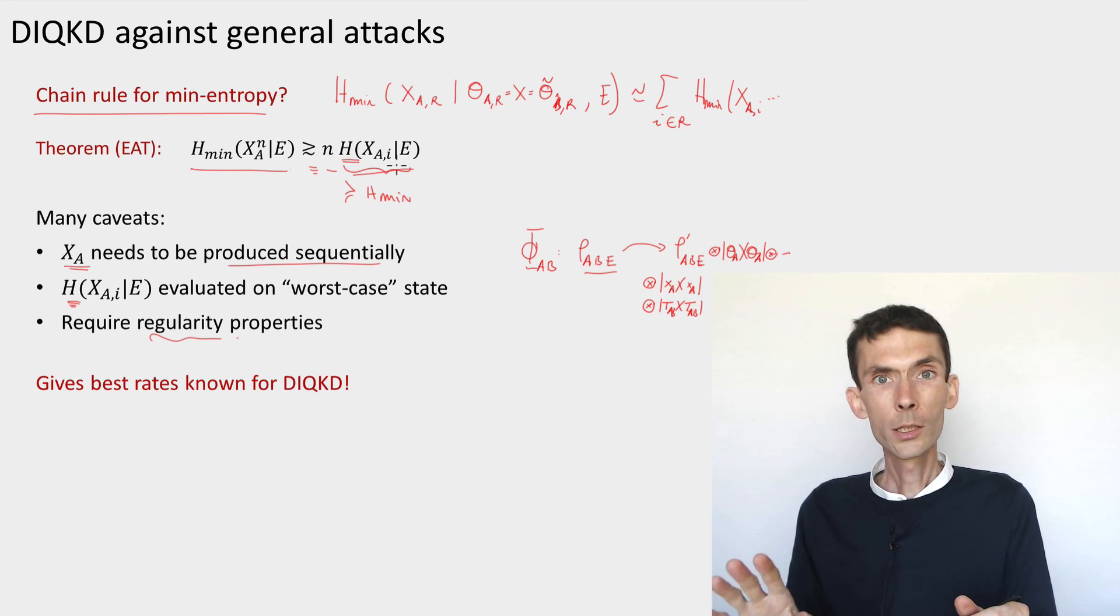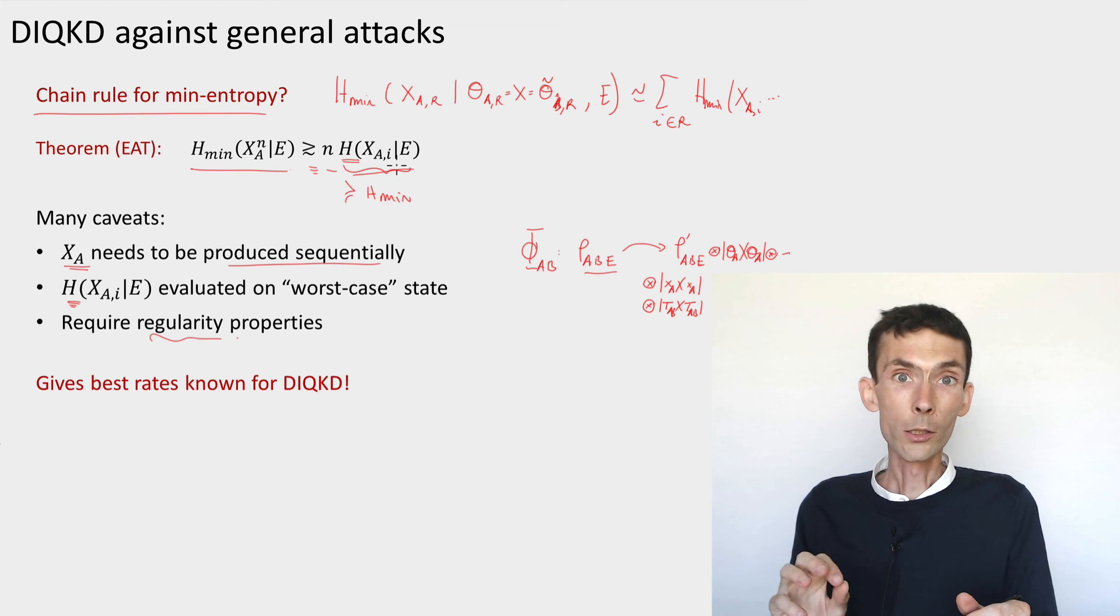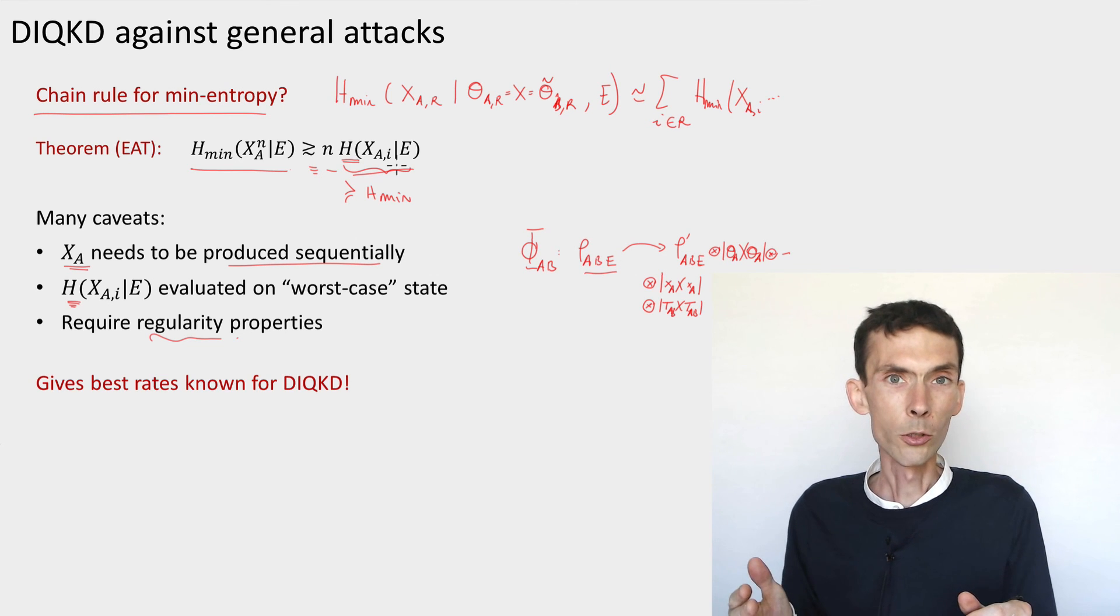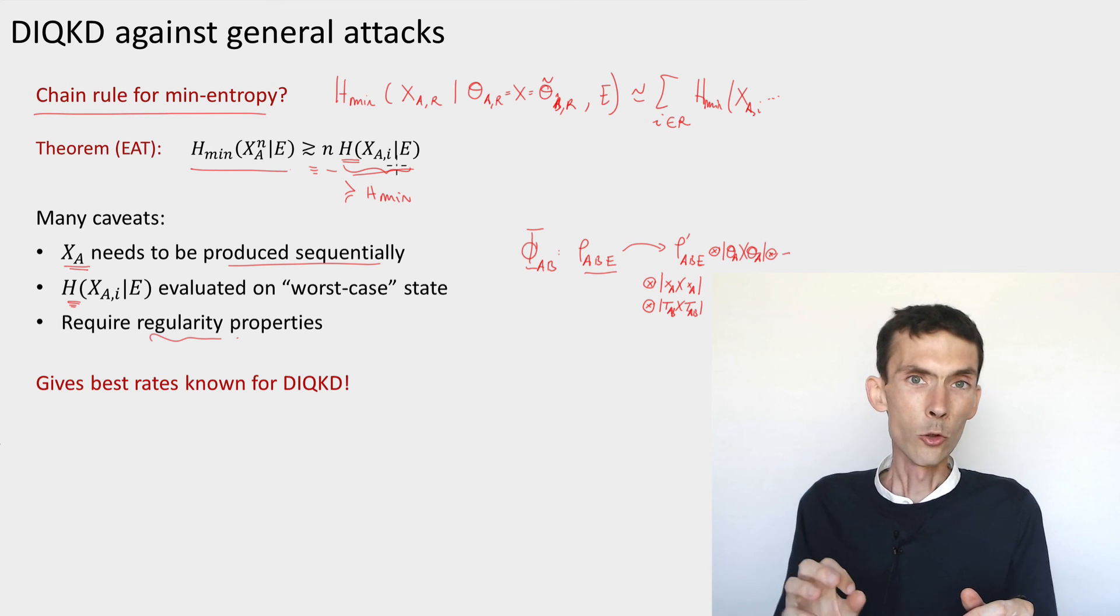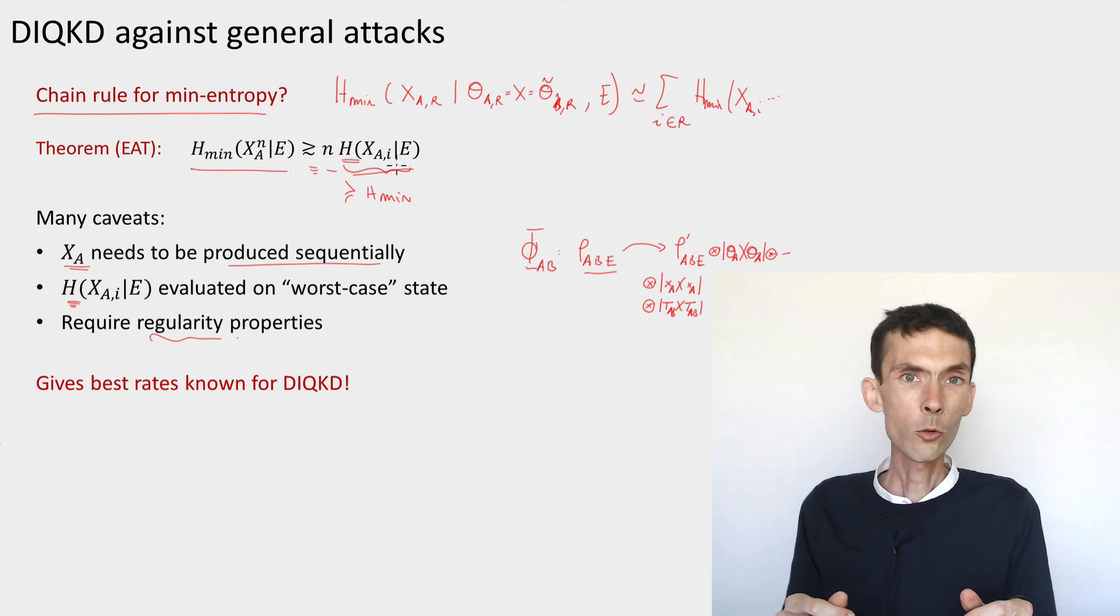And so what ultimately we're able to prove is that this protocol, the device independent one, is secure and produces an amount of key that scales almost as well as the purified BB84 protocol that we saw before, and we showed secure under much stronger assumptions. Under the assumption that you know what measurements are performed, you know that the states that are measured are qubits, etc.